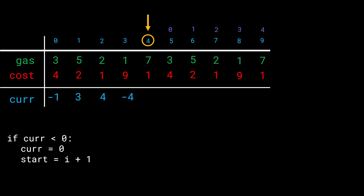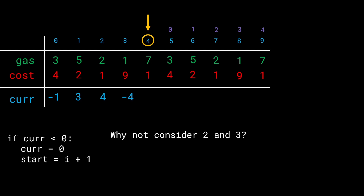Here's something to notice: we jumped directly from index 1 to index 4 as the starting position — we never considered indices 2 and 3. Why? Because as a car only passes a station when current ≥ 0, it accumulates more and more fuel at each station it passes. Starting from index 1 was the earliest option and allowed collecting the most fuel — and even that failed.